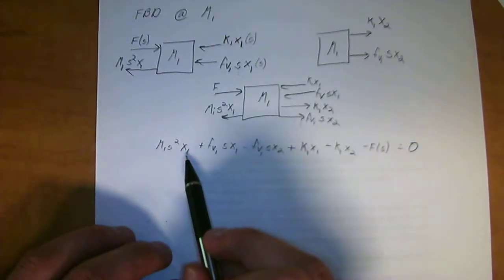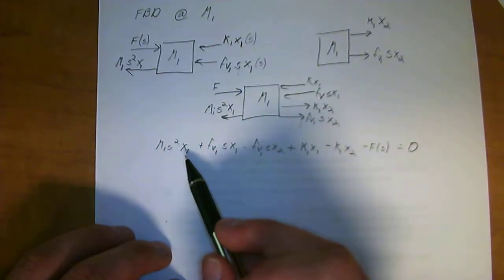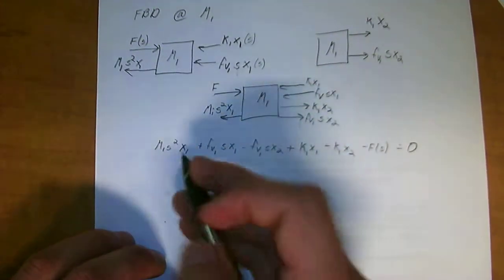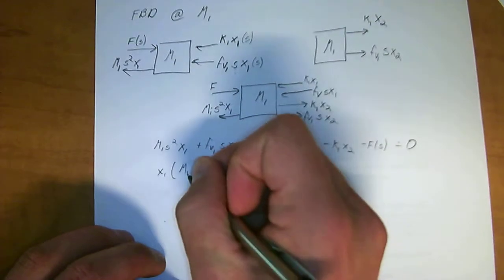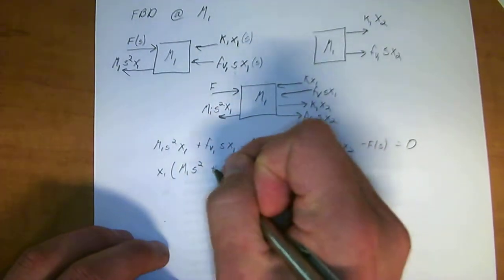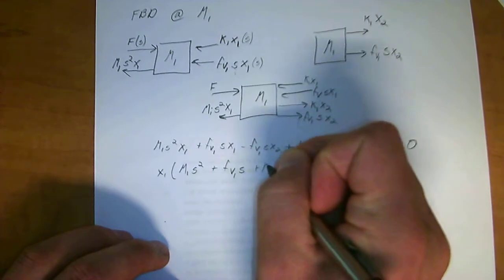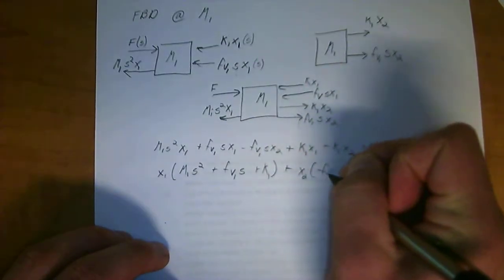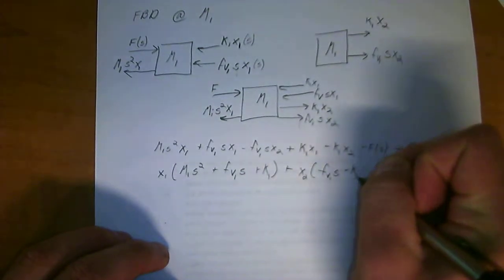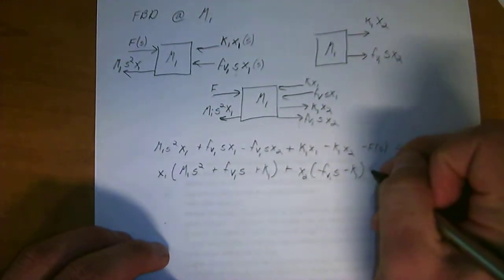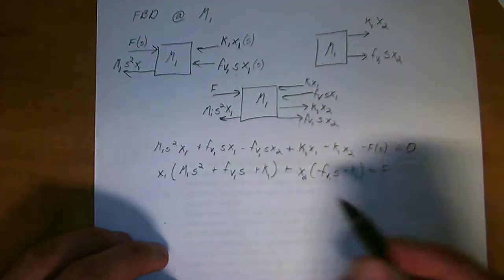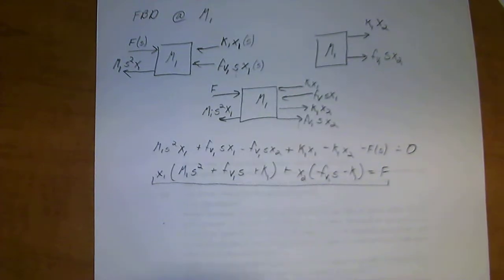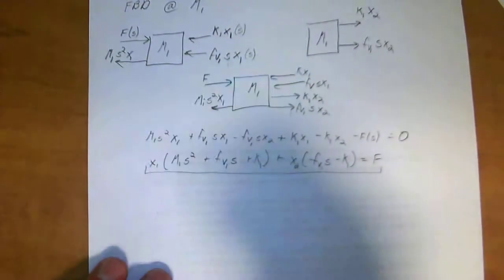And if we sort it out a little bit, you see how I've kind of grouped the s's so that they go from highest power to lowest power? Now let's group the x's. So x1 is equal to m1 s squared, plus fv1 s, plus k1, plus x2, minus fv1 s, minus k1, is equal to f. So there we are. We have the first differential equation, basically for the first system of m1.